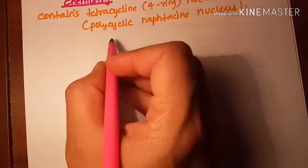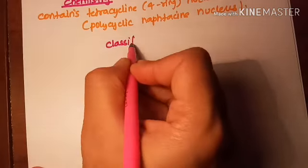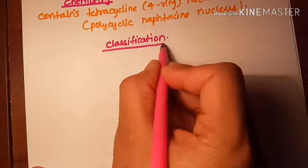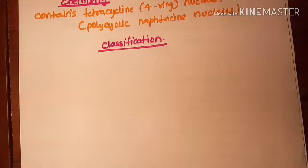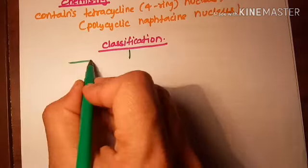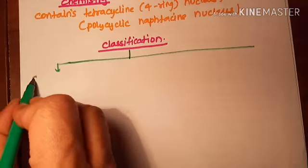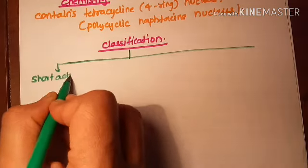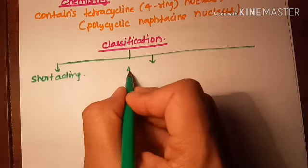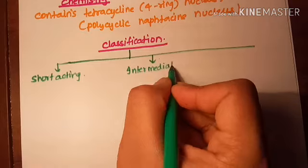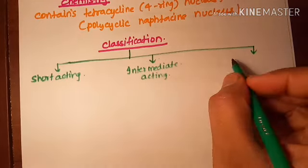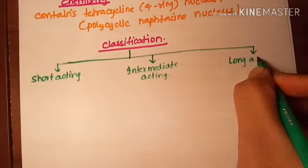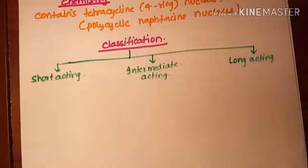Under classification, tetracyclines are divided into three categories: first, short-acting tetracyclines; second, intermediate-acting tetracyclines; and third, long-acting tetracyclines. Short-acting tetracyclines have a plasma half-life of 6 to 12 hours.